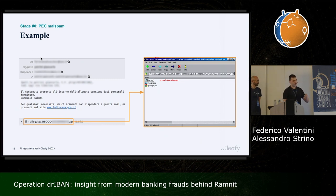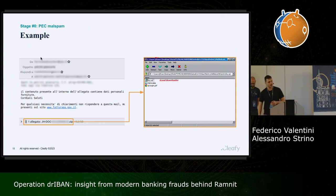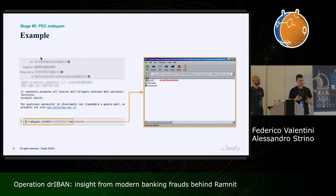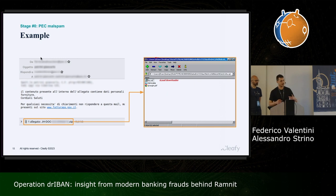If the victim opens the third file — a VBScript file — this routine starts. It is a downloader that performs a GET request to a specific command-and-control infrastructure and retrieves the core module of Sload. Another important thing: the authors implemented one-time downloads, so if you already clicked the downloader, you would not be able to retrieve the same payload again.